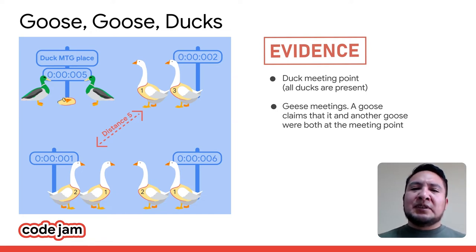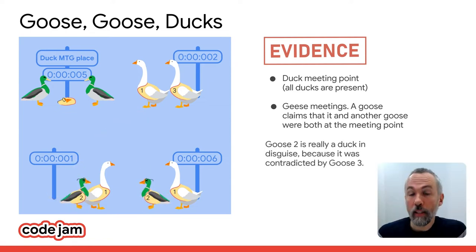Well, if Goose Two is really a good goose, then Goose Three lied and contradicted it. But you just said that can't happen. So, we know Goose Two is actually an evil duck. Yes, exactly. Note that Goose Three might also be a duck and we have no idea where Goose One was at any specific place in time, but we do know that Goose Two is secretly a duck in disguise.